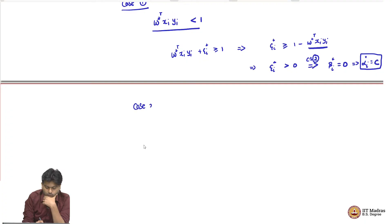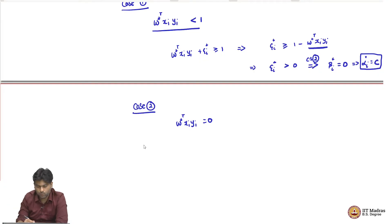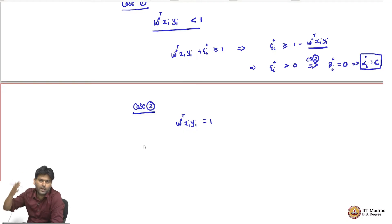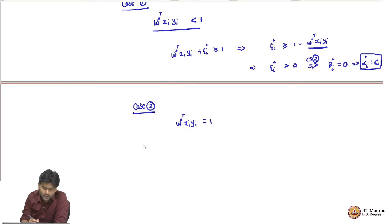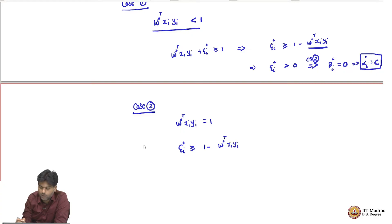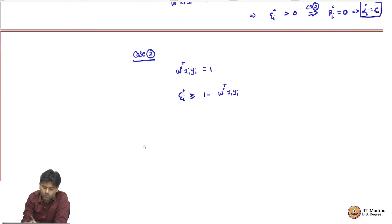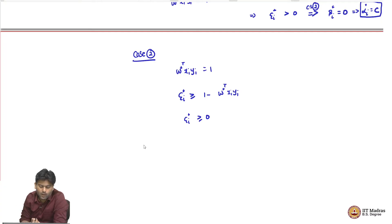The other case — case 2 — is when W star transpose x_i y_i equals 1. If I solve the primal problem and I observe that a point actually lies on the supporting hyperplane, can I say anything? Well, I know that epsilon star_i is greater than or equal to 1 minus W star_i transpose x_i y_i by feasibility, but now this quantity is 1, which means that epsilon star_i is greater than or equal to 0. I cannot really say anything more from this argument.